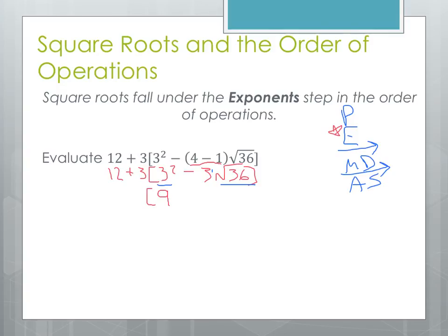Let's do those now. 3 squared is 3 times 3 or 9. Minus 3 times the square root of 36 is 6 because 6 times 6 will give us 36. And then let's copy everything down that we haven't used. We've got a 3 times that and a 12.